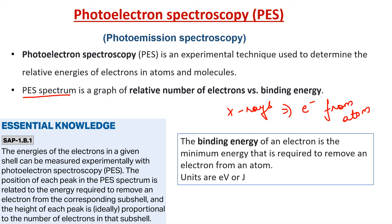The PES spectrum is a graph of the relative number of electrons versus binding energy. The binding energy of an electron is the minimum energy required to remove an electron from an atom. This is similar to ionization energy, but ionization energy refers to removing the outermost electron, whereas binding energy refers to removing any electron — whether a core electron or valence electron. The units of binding energy can be electron volts or joules, same as ionization energy.